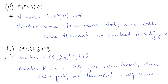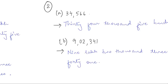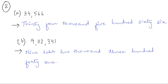Now look at question number (f): 652346093. After putting the commas as per the Indian place value chart, you will get 65,23,46,093. The number name is sixty-five crore twenty-three lakh forty-six thousand ninety-three.